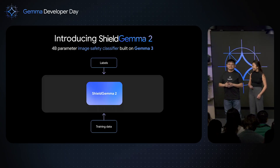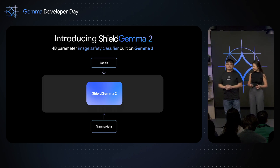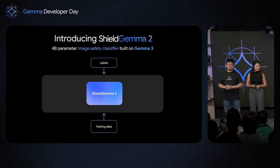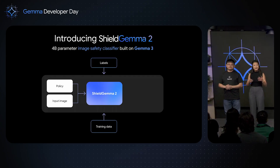Shield Gemma 2 is built on high quality labels. We specifically curated a mixture of synthetic and natural image data ranging from key harm categories. We leverage in-context learning strategies to develop this four billion model on top of Gemma 3.